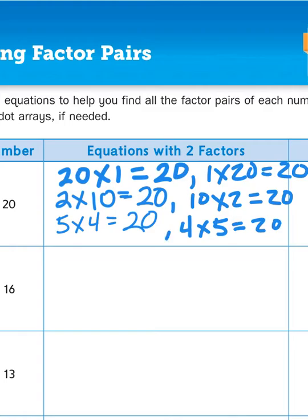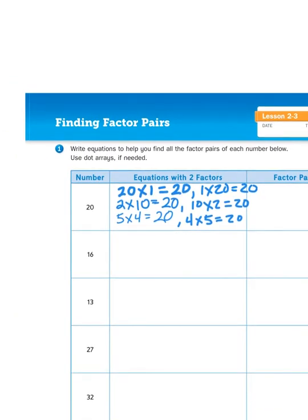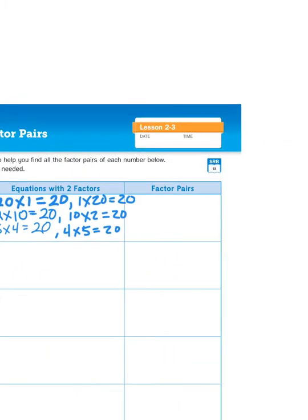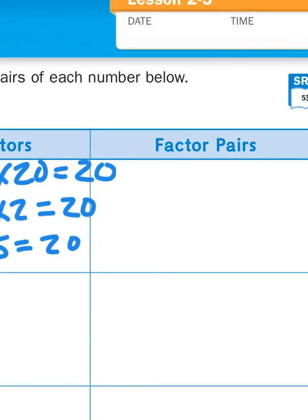So when I examine all these factor pairs, I start to notice that I'm repeating some numbers. So when I go to list the total possible combinations, I only have to list each number once. So I'm not going to write 1 and 20 as a factor pair, and then turn around and say 20 and 1 as a factor pair. They're both the same.